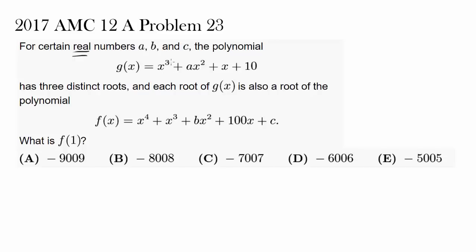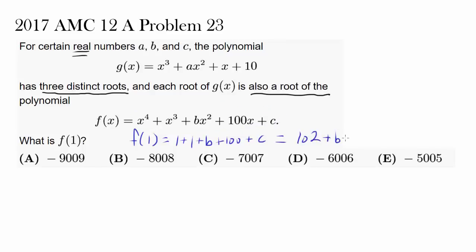The polynomial G(x) equals x³ + Ax² + x + 10 has three distinct roots, and each root of G(x) is also a root of the polynomial F(x), which is x⁴ + x³ + Bx² + 100x + C. We wish to find F(1). Plugging 1 into F gives 1 + 1 + B + 100 + C, which equals 102 + B + C. So as soon as we find B + C, or B and C individually, we are done.